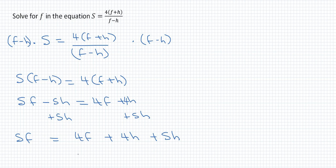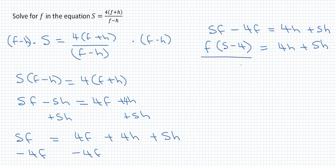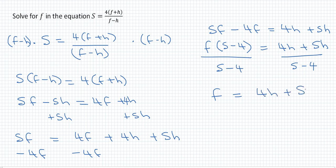Since we need to isolate F, we move 4F to the left-hand side: SF minus 4F equals 4H plus SH. We factor out F to get F times the quantity S minus 4, equal to 4H plus SH. Dividing both sides by S minus 4 to isolate F, we get F equals 4H plus SH over S minus 4.